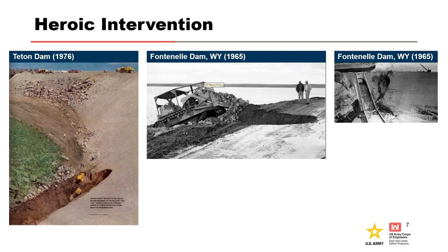At Teton Dam, a wet spot appeared on the downstream face less than about 20 feet from the abutment. The wet spot quickly turned into active seepage and a hole appeared. As the hole grew larger, two bulldozers were dispatched to push boulders and material into the hole, but it continued to erode faster than they were able to fill it. The note in the photo reads: after vainly trying to fill the breach in the embankment of Teton Dam, two CAT operators back towards safety as their bulldozers slide into the widening gap. The dam failed shortly after this photograph.